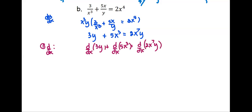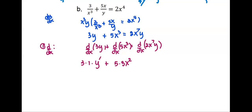We treat y as a function of x. For the first term, we get 3 times y to the power 0, which is 1, times y prime — so 3 times 1 times y prime. For the second term, we get 5 times 3x squared, since x is the independent variable and we just apply the regular power rule.